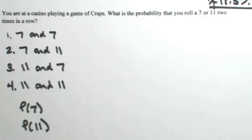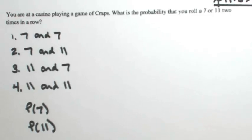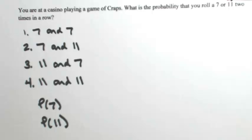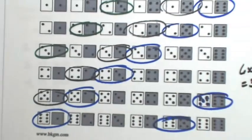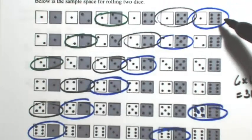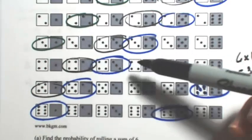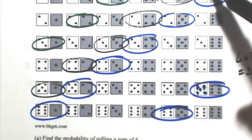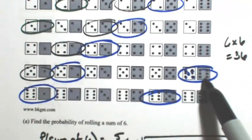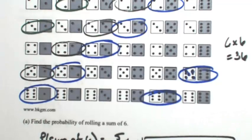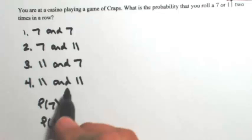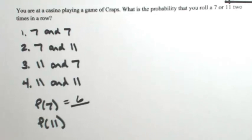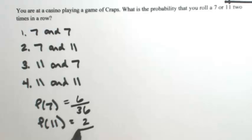Once you roll a 7, you can roll a 7 again — it's not going to affect the next roll. The probability of getting a 7 can be done with combinations: 1 and 6, 2 and 5, 3 and 4, 4 and 3, 5 and 2, 6 and 1 — there are six ways to get a 7. To get an 11, it could be 5 and 6 or 6 and 5 — two ways to get an 11. With two dice, there are 6 times 6 equals 36 total outcomes. So the probability of 7 is 6 out of 36, and the probability of 11 is 2 out of 36.